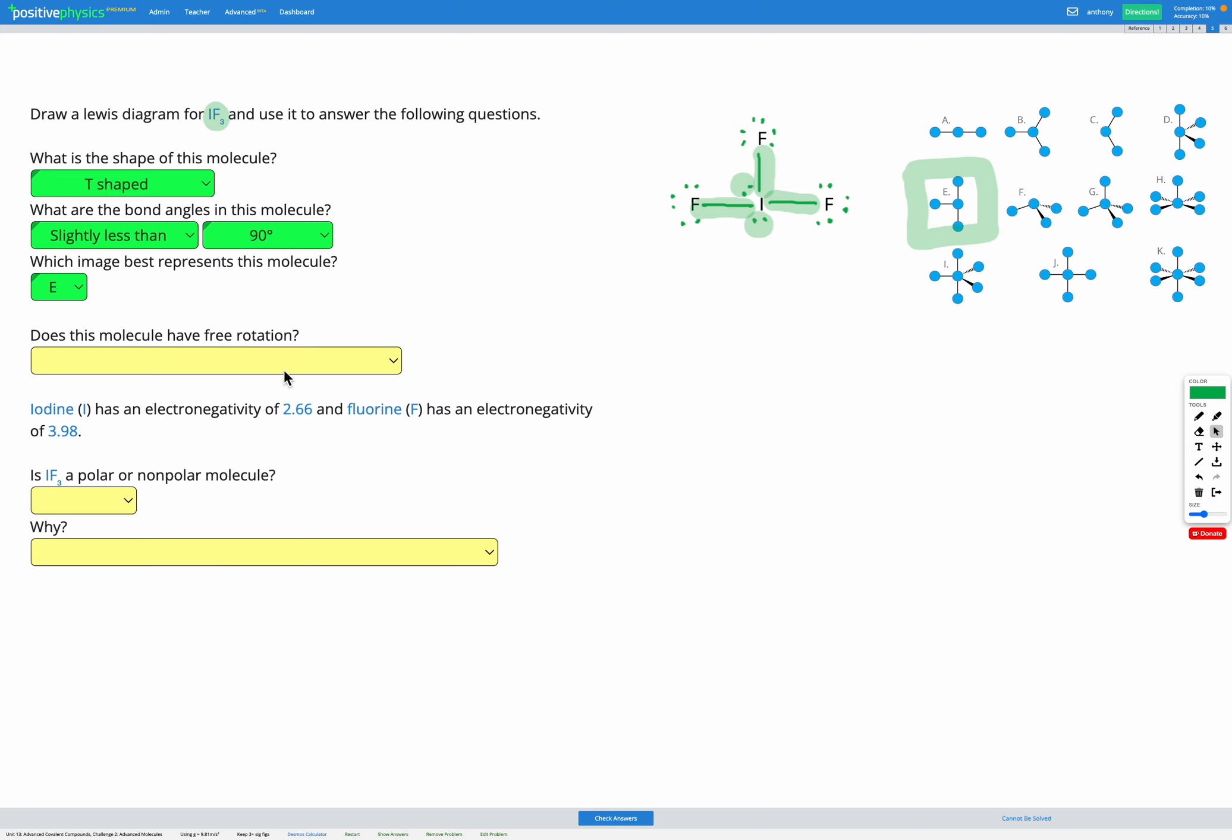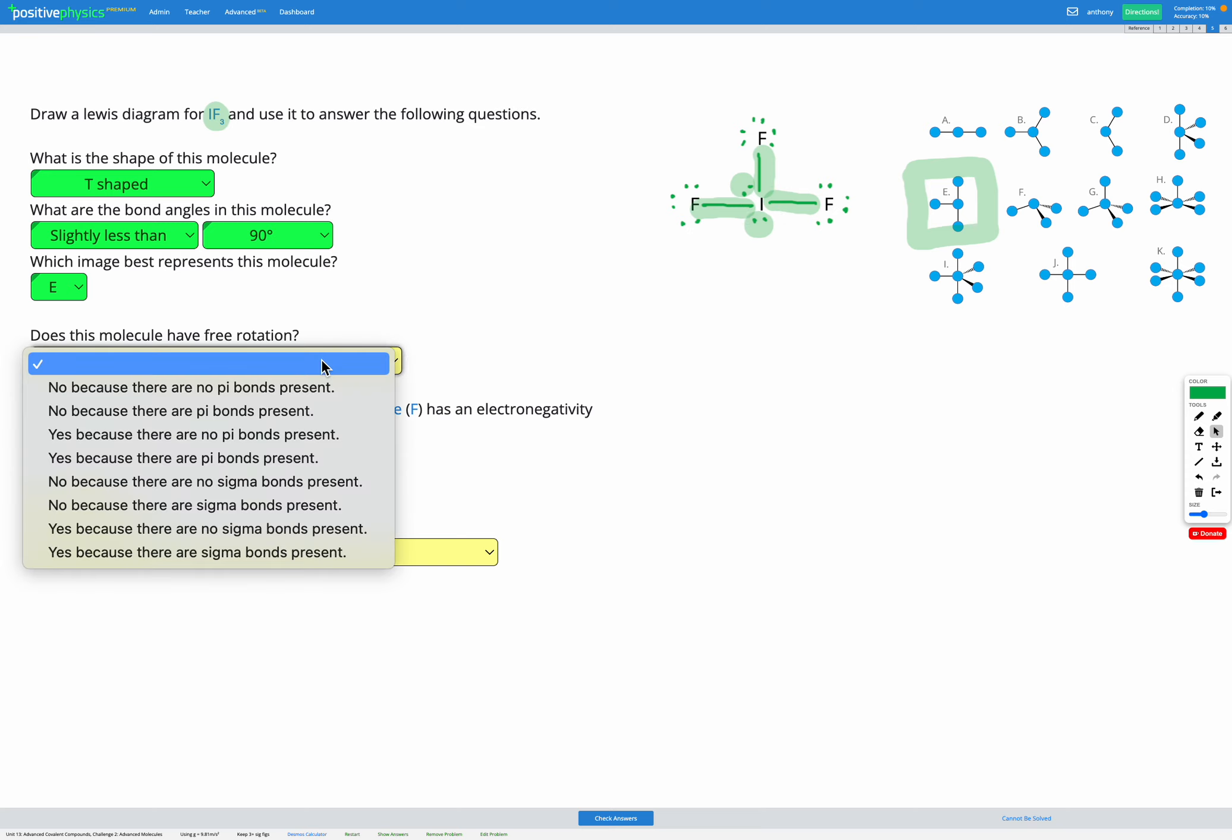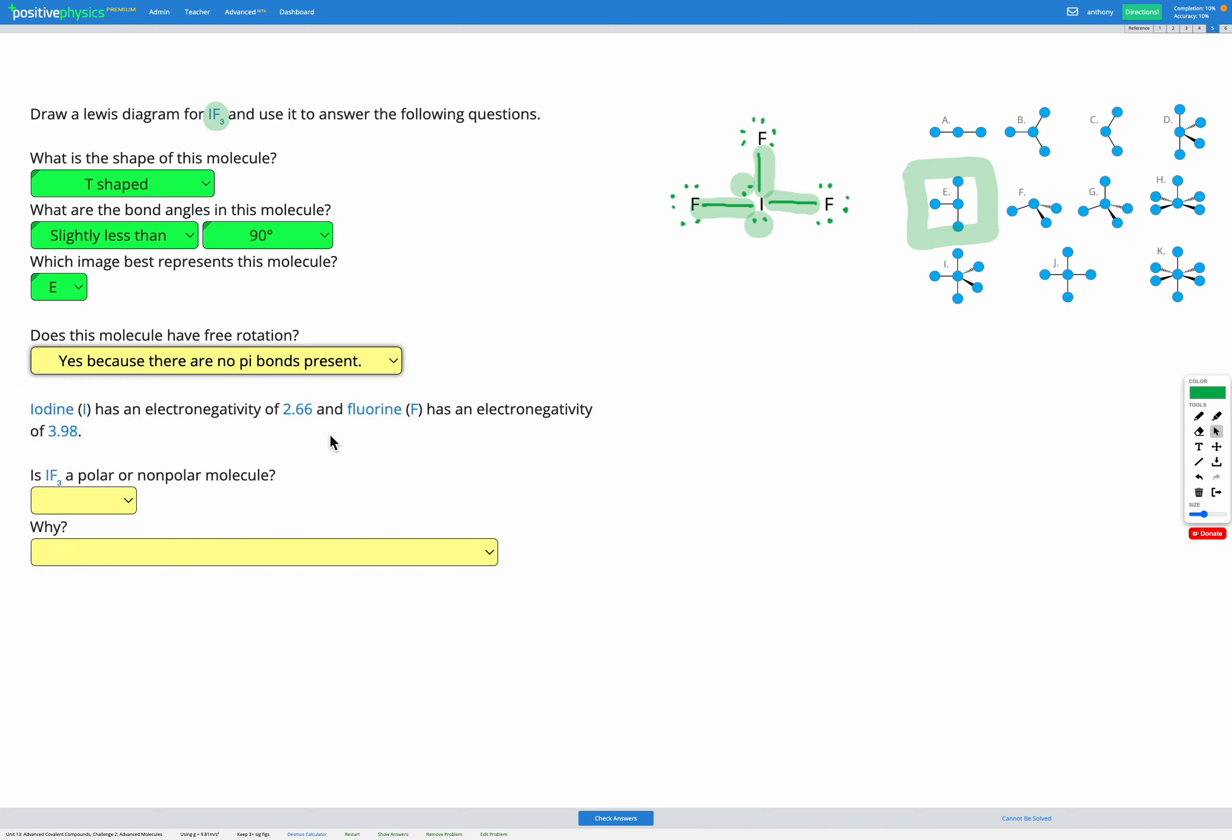The next question asks, does this molecule have free rotation? To answer this question, we need to look if we have single, double, or triple bonds in our molecule. Our molecule only contains single bonds. There are no double or triple bonds. Single bonds are made up of sigma bonds and do not include pi bonds. Sigma bonds do allow free rotation and pi bonds don't. Since we only have sigma bonds, this molecule does allow free rotation. So the answer is yes, because there are no pi bonds present.